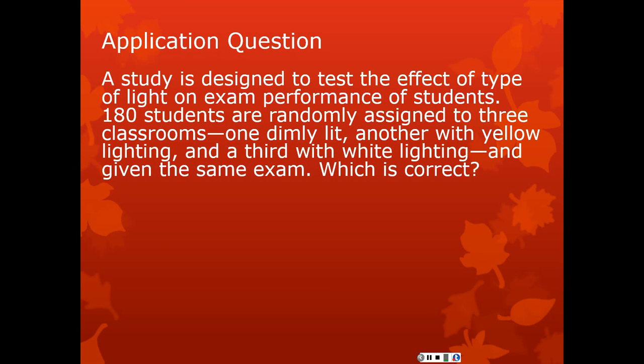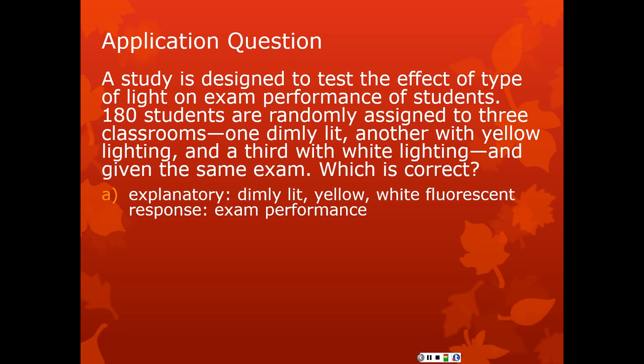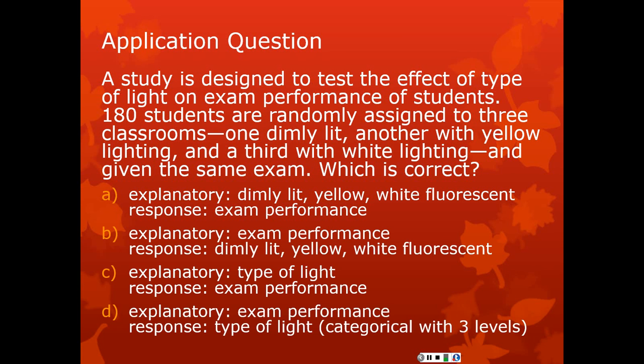So here's an application question that we can use to discuss some of these issues of experimenting. This is an experiment. You want to test the effect of types of light on exam performance. 180 students show up. These are selected by some process. We don't know how they were selected. We don't know how they were sampled. We don't know what the population is. So let's leave that out of this. But they are randomly assigned, which is different. After they've been selected, then you divide them into groups sometimes. And when you divide them into groups, one of the best ways to do that is randomly, and that's called random assignment. So they have three classrooms. One classroom is dimly lit, another has yellow lighting, and a third has white lighting. And then they're all given the same exam. And of course, you want to compare and see who does better on that exam. Classroom one, classroom two, classroom three. So which of the following is correct? I'll pause here for a second and let you read this. You might want to pause your video so you can think about it, and then I'll give you the right answer.